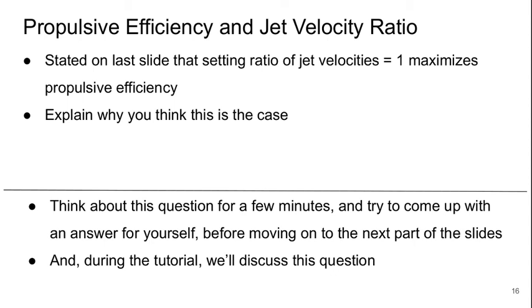So on the last slide, I just stated that setting the jet velocity ratio to be 1 is going to maximize propulsive efficiency. What I want you to do is explain why this makes sense. Why do you think this is the case? So think about this for a couple of minutes and try to come up with an answer for yourself before you move on to the next part of the video.